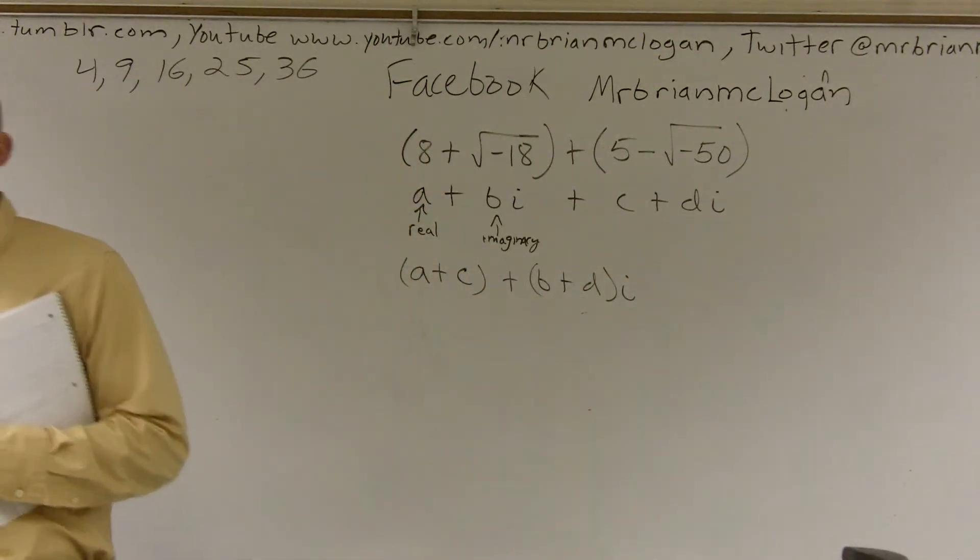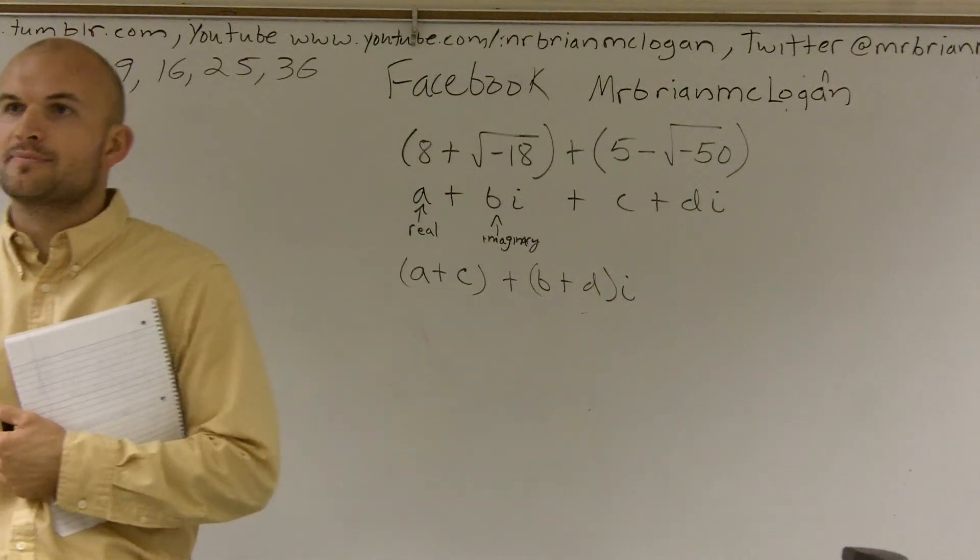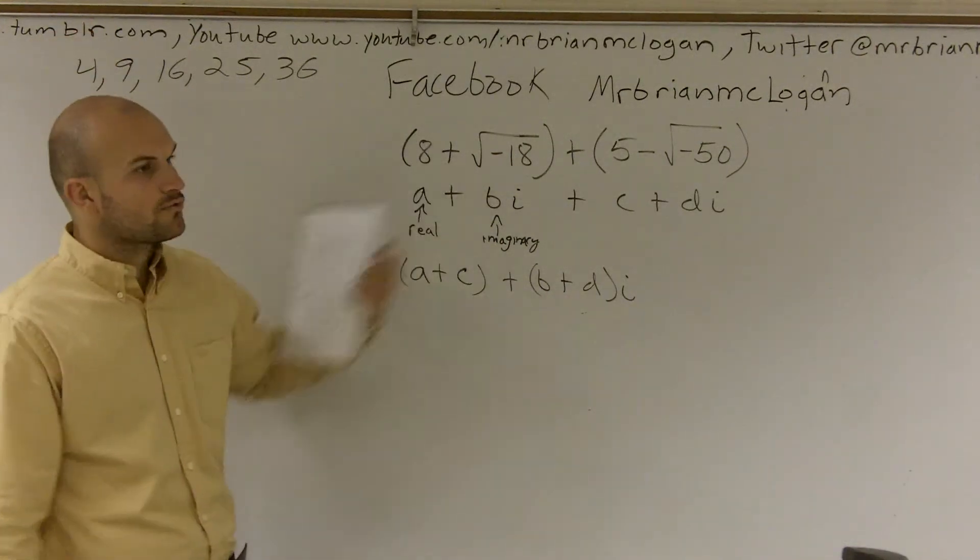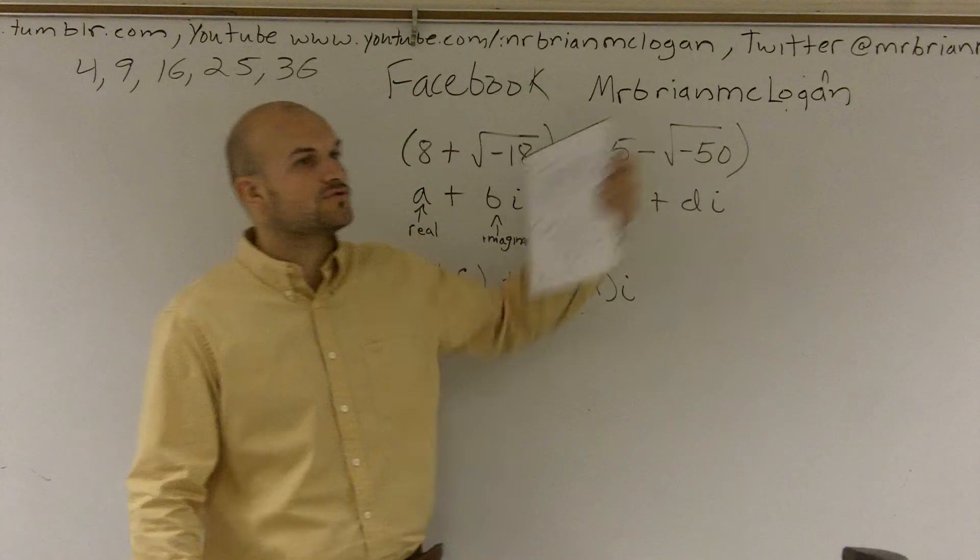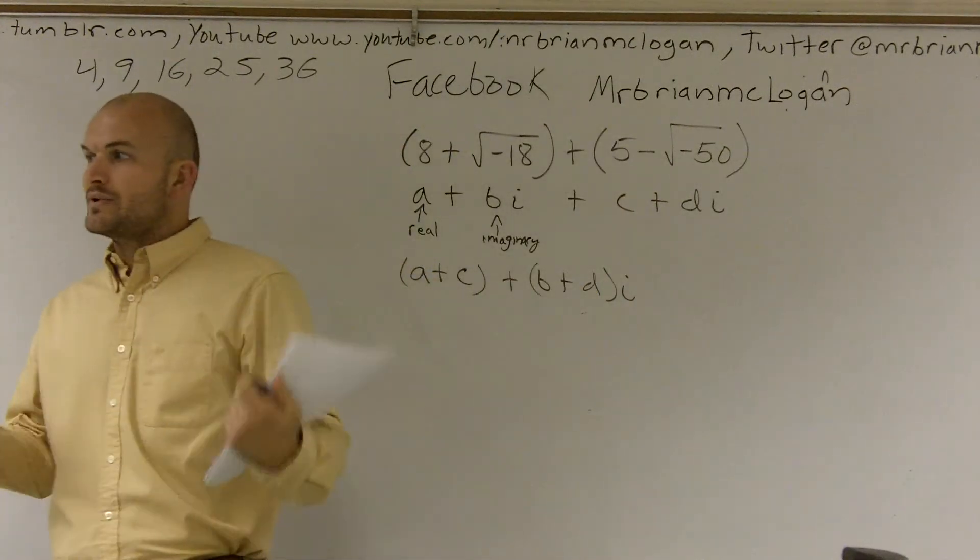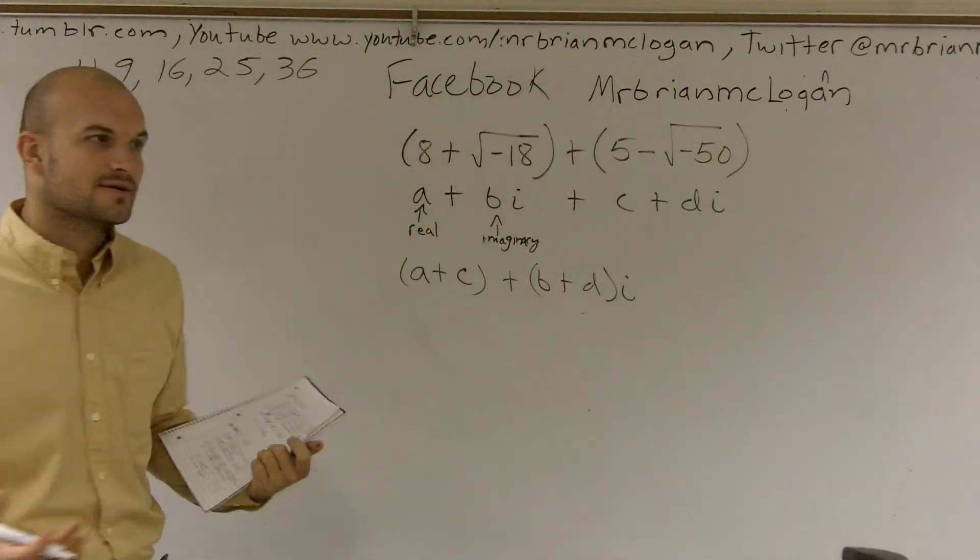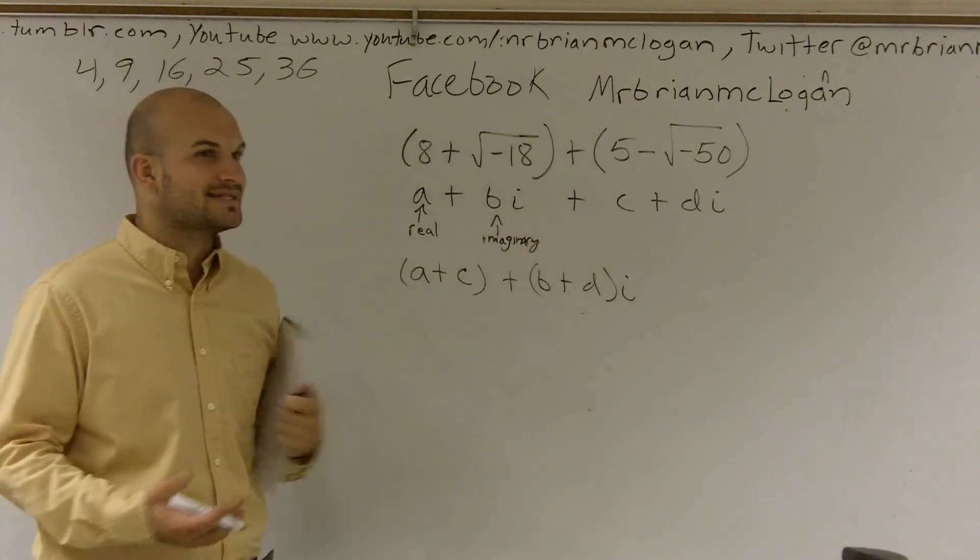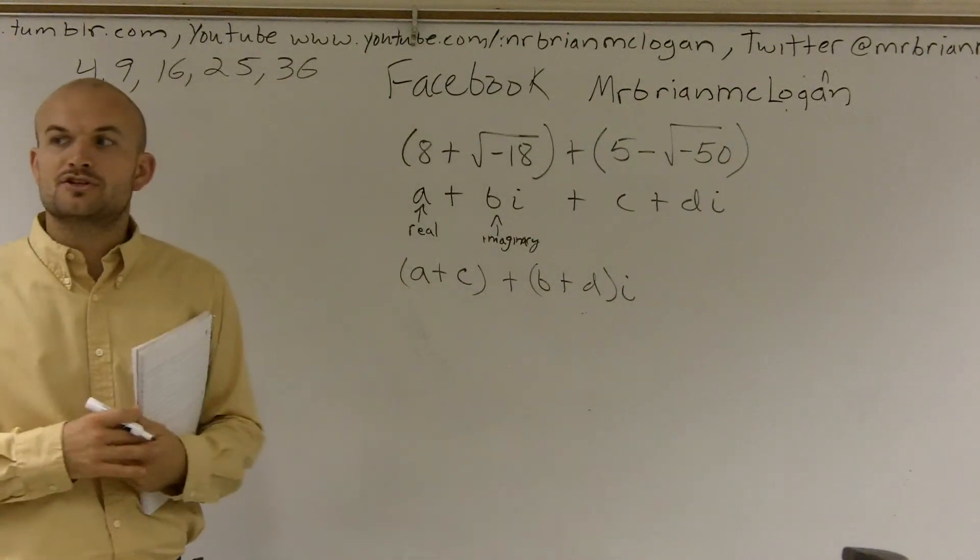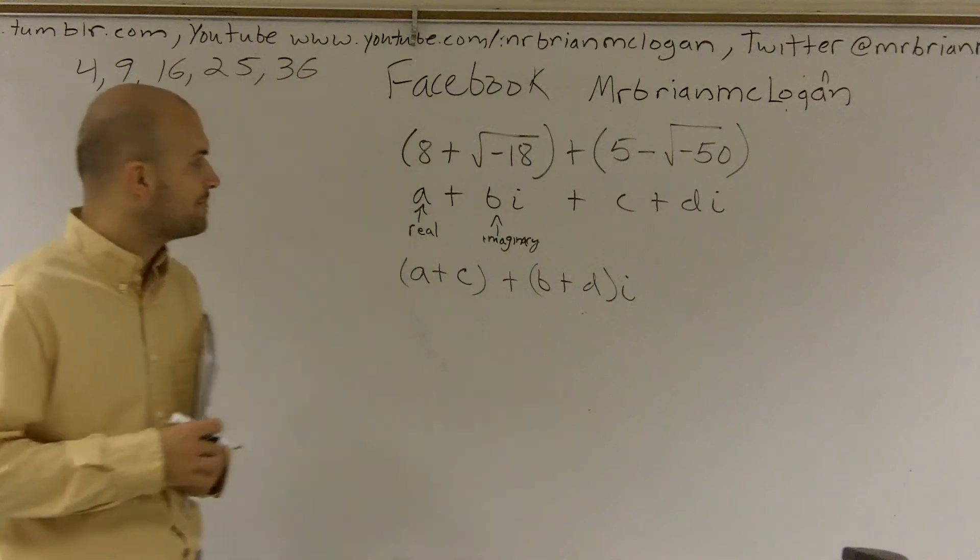Now we have a little problem here because we don't have any imaginary numbers up there, do we? We have it written as the square root of negative 18, and we have it written as the square root of negative 50. So whenever we're talking about imaginary numbers and we're not seeing an i, we're going to have to transform it so it's back into its imaginary part.